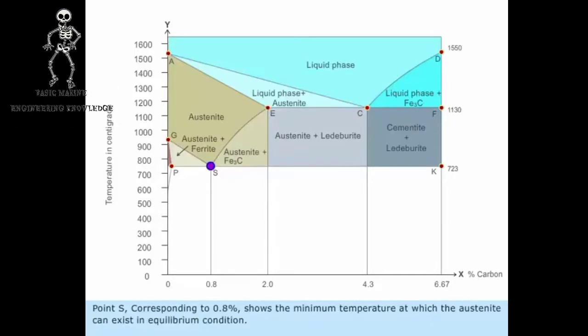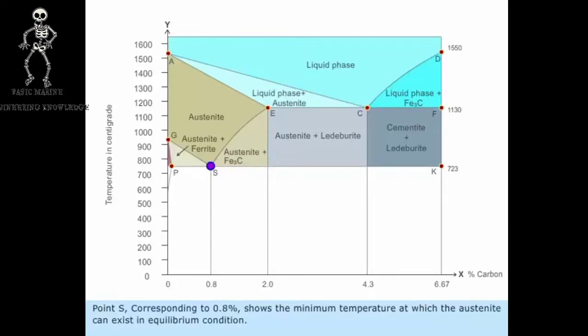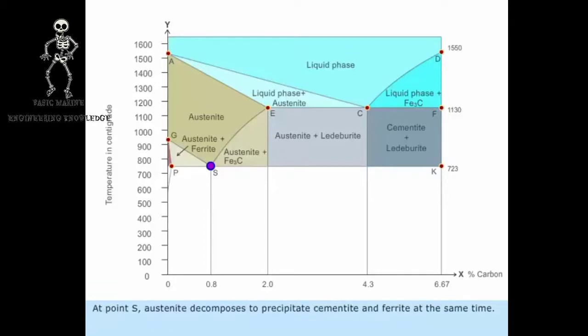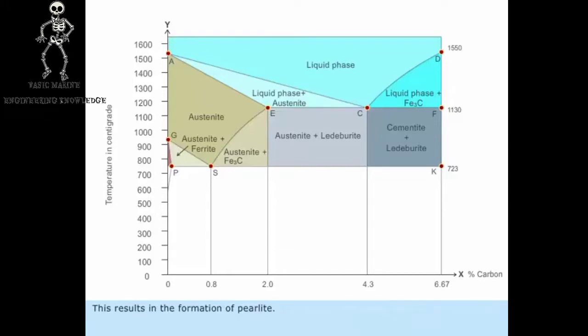Point S, corresponding to 0.8 percentage, shows the minimum temperature at which the austenite can exist in equilibrium condition. At point S, austenite decomposes to precipitate cementite and ferrite at the same time. This results in the formation of perlite.